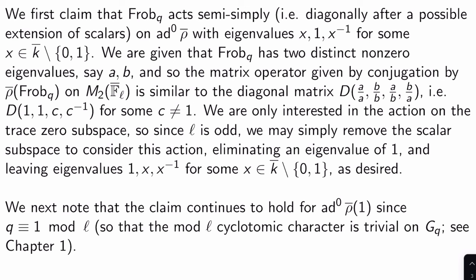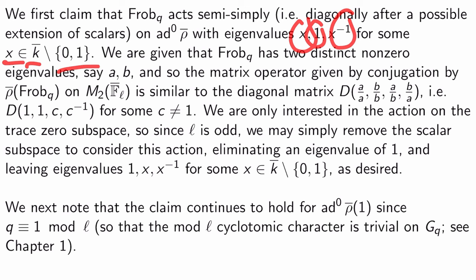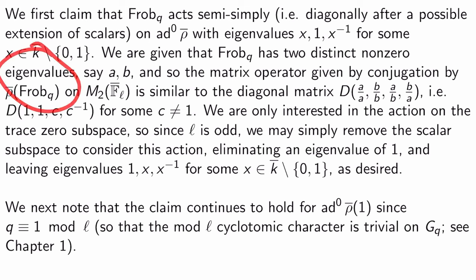The proof is pretty simple. We first claim that Frobenius at q acts semi-simply — meaning diagonally after a possible extension of scalars — on ad^0 rho-bar, with eigenvalues x, 1, and x-inverse for some x in k-bar that's not 0 or 1. Indeed, Frobenius at q has two distinct non-zero eigenvalues, call them a and b. So the matrix operator given by conjugation by rho-bar(Frobenius_q) on M_2(F_l-bar) is similar to the diagonal matrix with entries a/a, b/b, a/b, and b/a, which we call 1, 1, c, and c-inverse for some c not equal to 1.